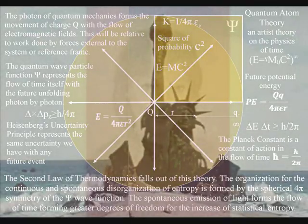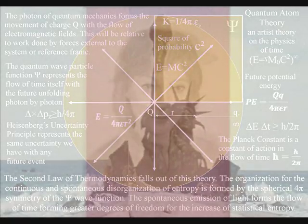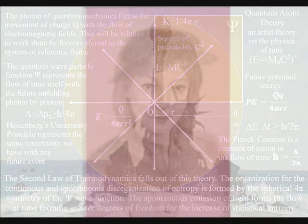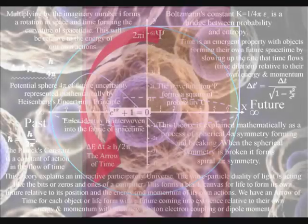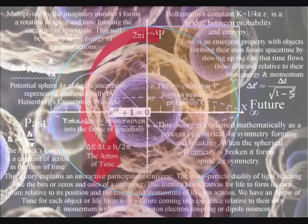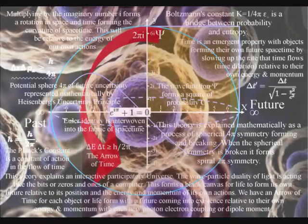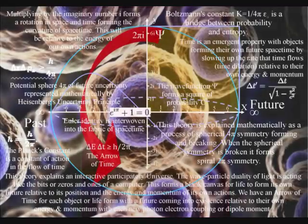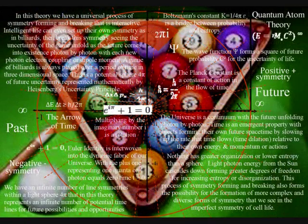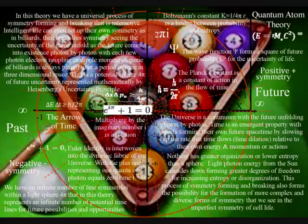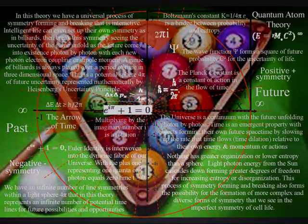This process of symmetry forming and breaking also forms the possibility for the formation of more complex and diverse forms of symmetry that we see as the imperfect symmetry of cell life. Intelligent life forms can even set up their own symmetry as in billiards, snooker, or even chess, and then break this symmetry, seeing the uncertainty of the game unfold as the future comes into existence photon by photon.